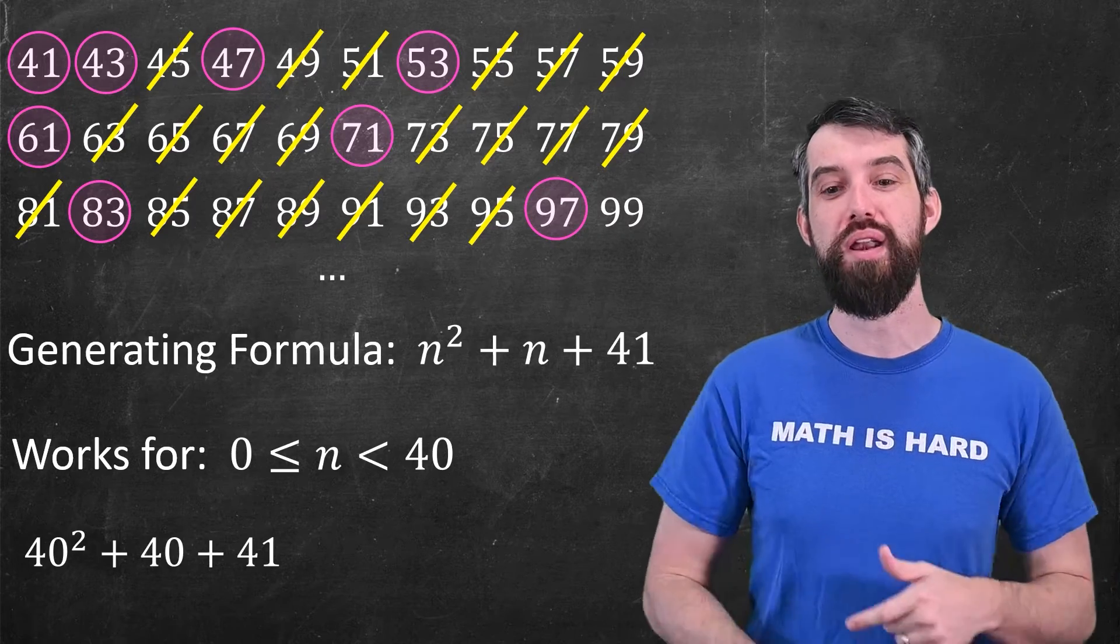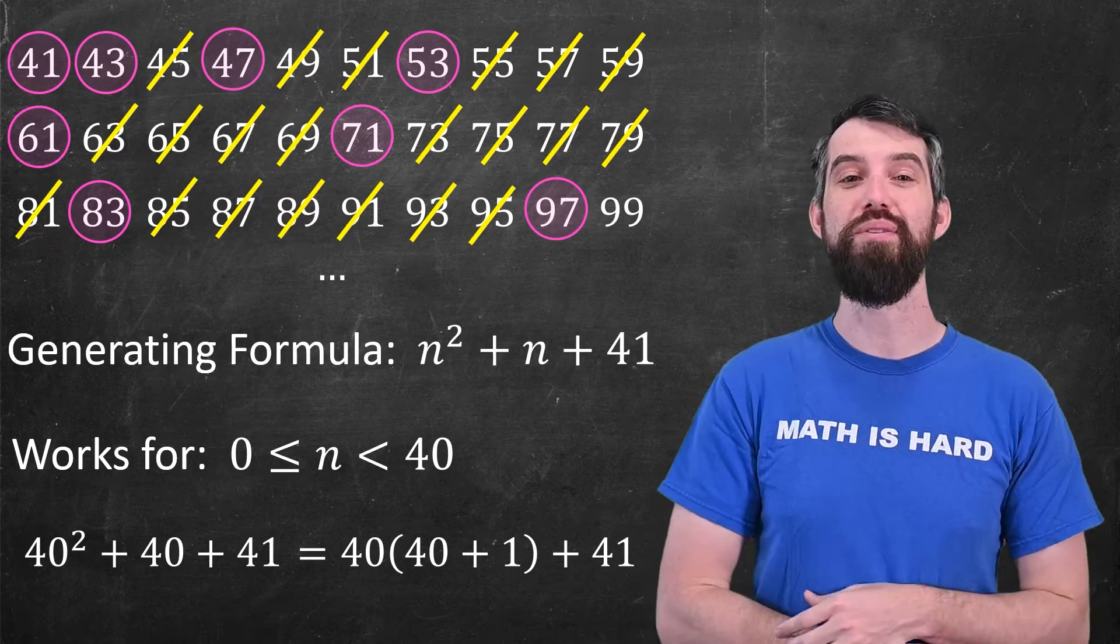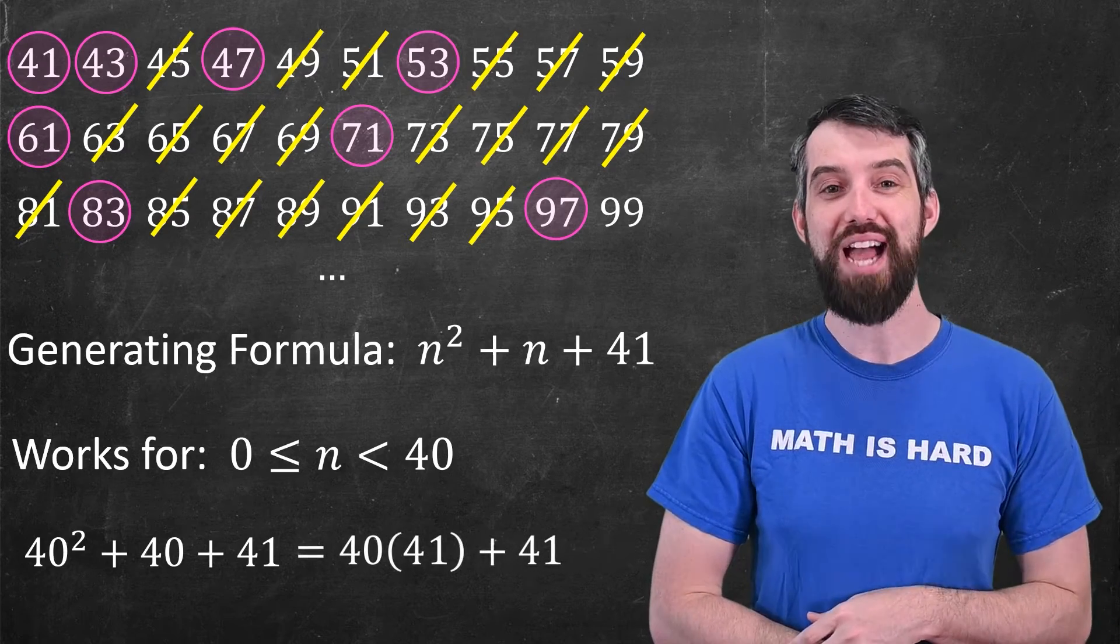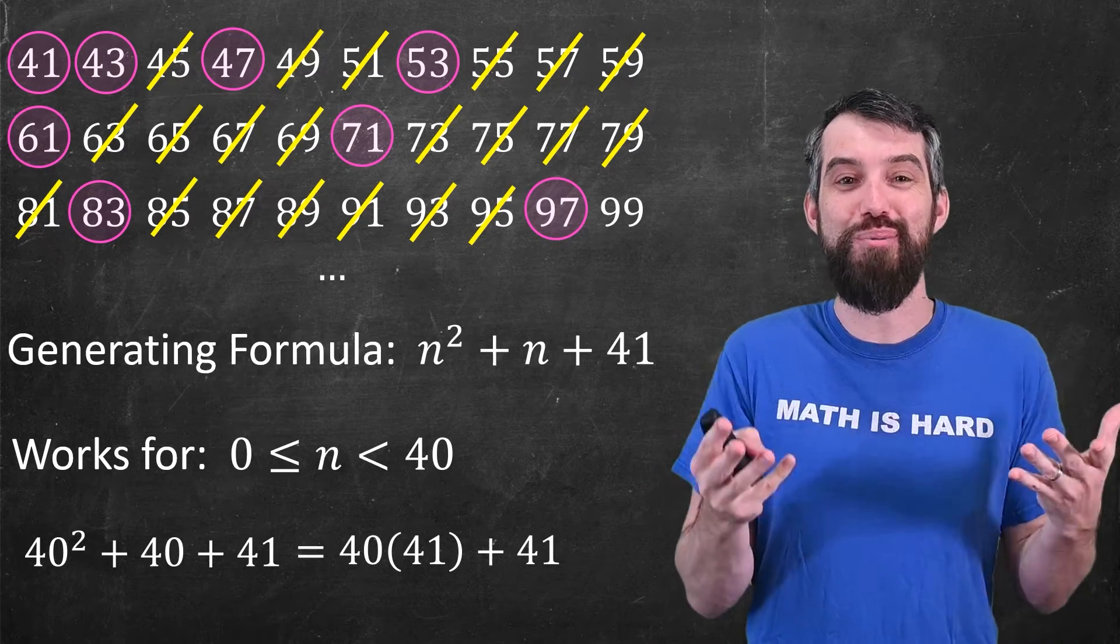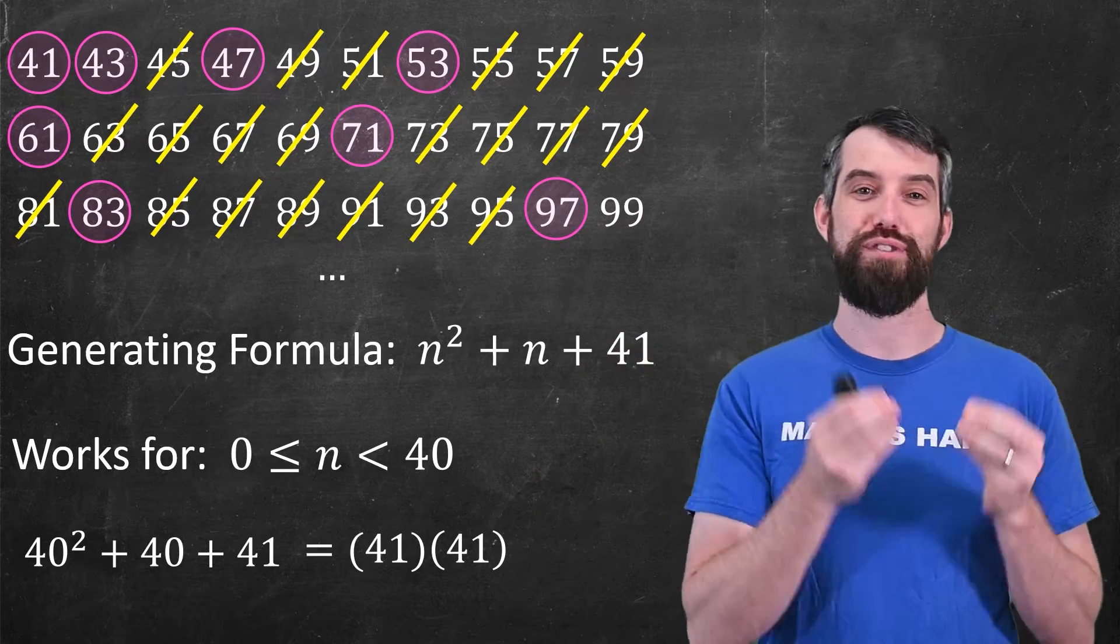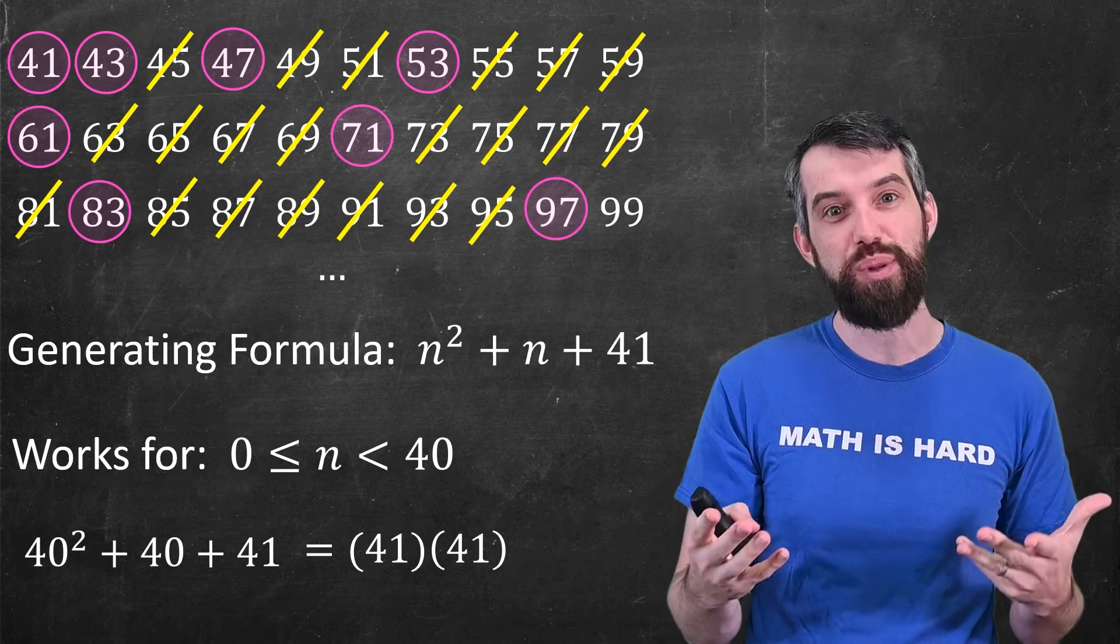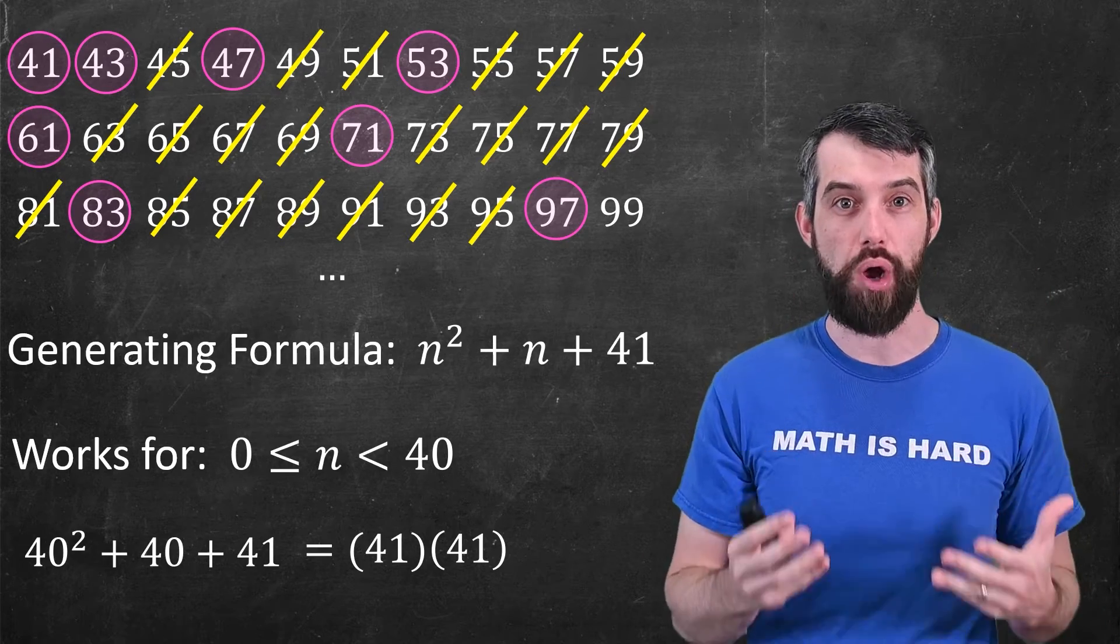But it eventually breaks. If I plug 40 into the formula, so 40 squared plus 40 plus 41, well, I could put this together as 40 times 40 plus 1, which is just another way of saying 40 times 41, and that's just 41 squared. It's clearly composite. So this formula that works for such a long time and tells you so many prime numbers, very simply, it doesn't actually work long term.